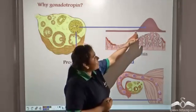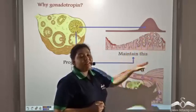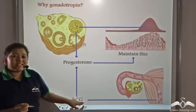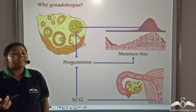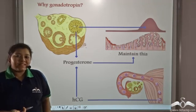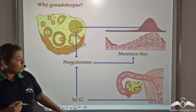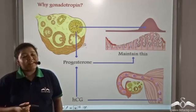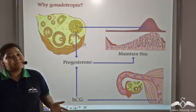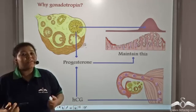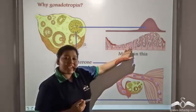When progesterone reaches peak levels, the endometrium is also at its thickest. The hormone HCG is called a gonadotropin because gonads are the organs that form reproductive cells — testes in males and ovaries in females. Tropin means to stimulate, so this hormone stimulates the corpus luteum present in the ovary to release progesterone and maintain the endometrial layer.